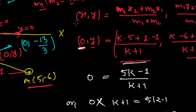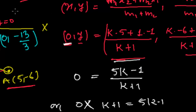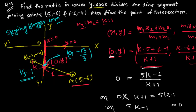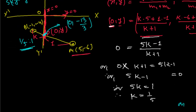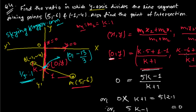This is a really simple problem. First draw a rough diagram and see exactly where the axis is cutting, name that point, and suppose the ratio k : 1. If the x-axis is cutting, the y-coordinate will be 0; if the y-axis is cutting, the x-coordinate will be 0. Equate using the section formula to get the ratio, then apply the same ratio to find the y-coordinate and the point of intersection.